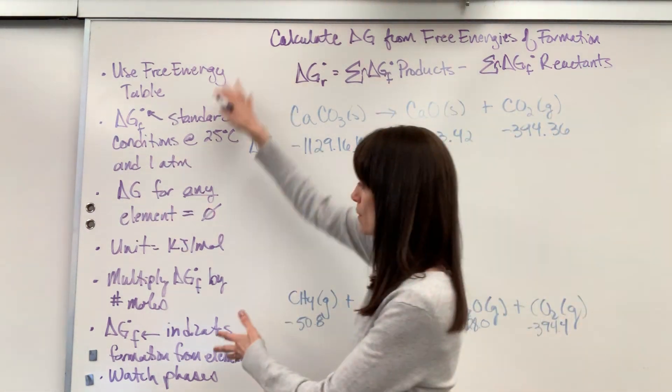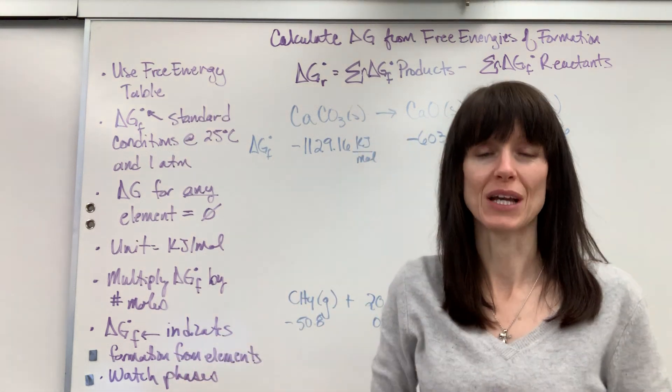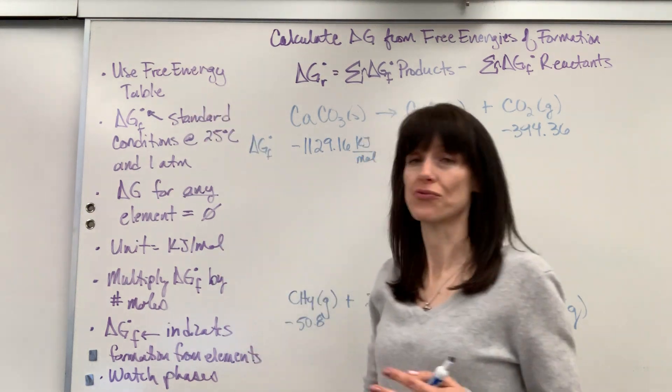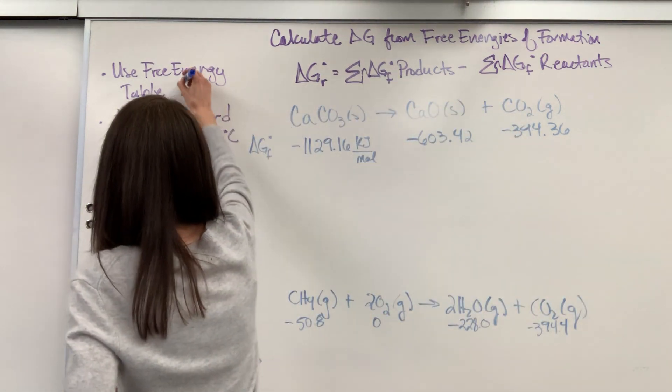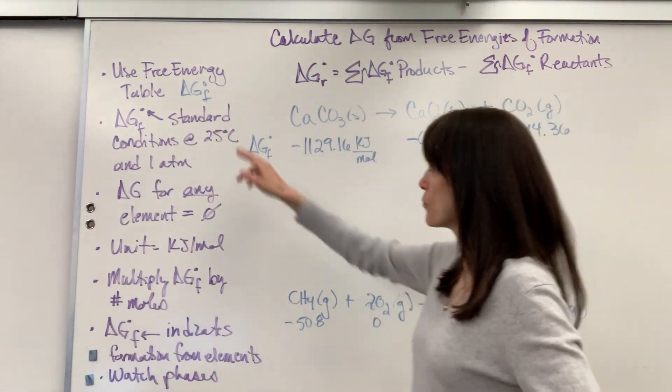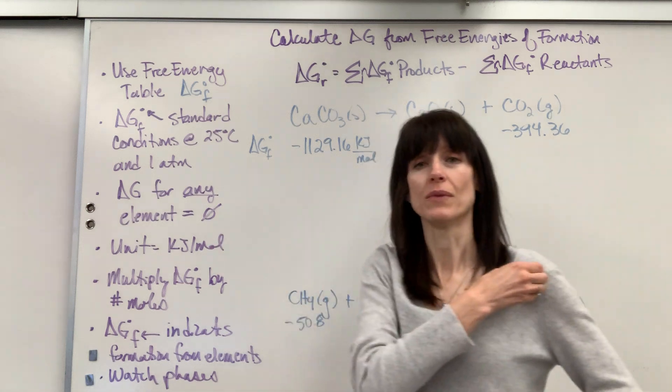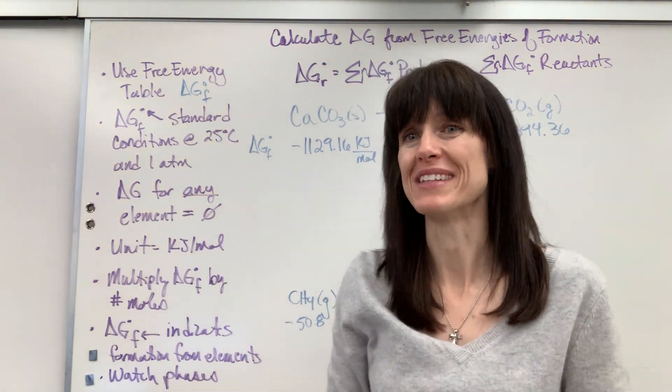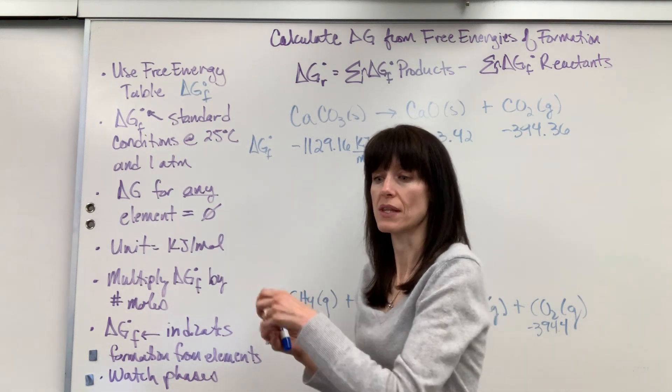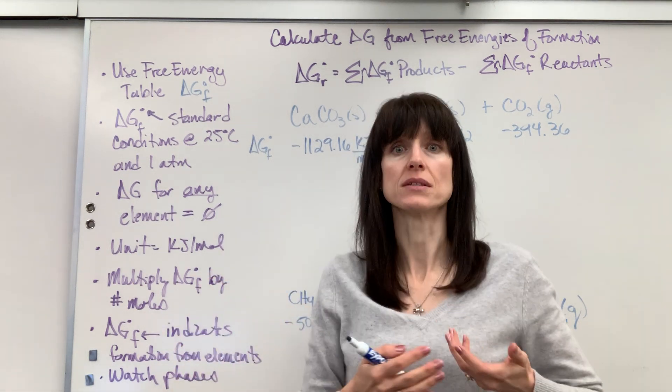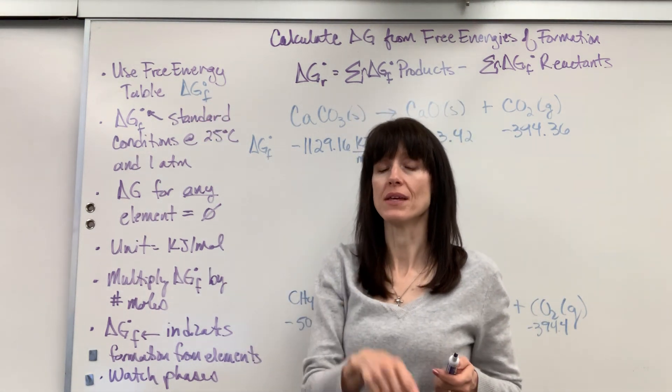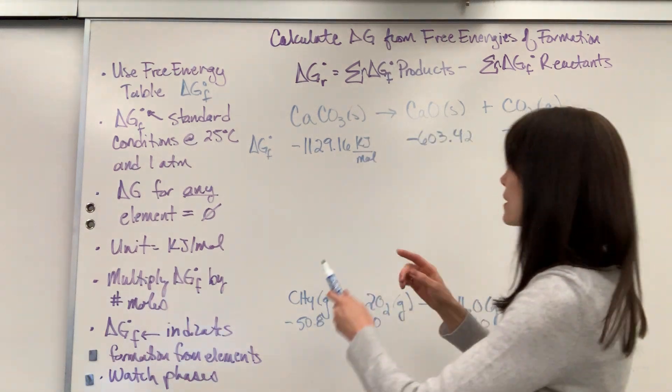So before we begin, let me give you some things to keep in mind to help you with the details so that you don't make small mistakes. First of all, you're going to use a free energy table, and that's just a table that has the delta G at standard conditions for formation. Formation you'll recall means forming a compound from elements, and the value that you get in those tables is actually the energy that's available to do work or the energy that's absorbed when you form that compound from its elements. Let me give you an example.